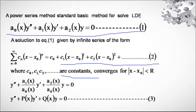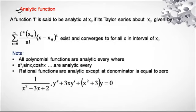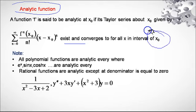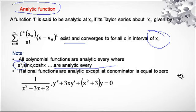A function f is said to be analytic at the point x₀ if the Taylor series about x₀ — given by summation from n=0 to infinity of fⁿ(x₀)/n! × (x − x₀)ⁿ — exists and converges for all values of x in the interval about x₀. All polynomial functions are analytic, as are exponential functions, trigonometric functions, hyperbolic functions.